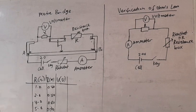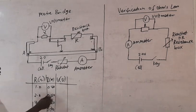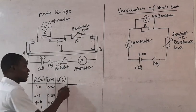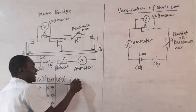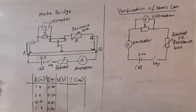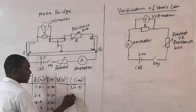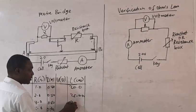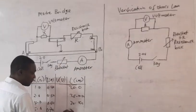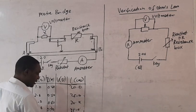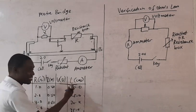Since the rheostat does not have a fixed value, they may tell you the current that you are going to adjust the rheostat to get. It is also possible for them to ask you to slide the jockey on the length — so you also determine the length. They will tell you the length to adjust it to: maybe 20.0 cm, 25.0 cm, 30.0 cm, 35.0 cm. These are possibilities.